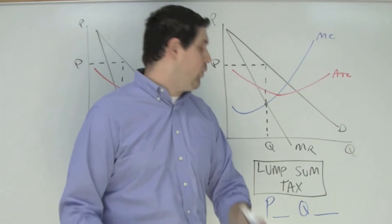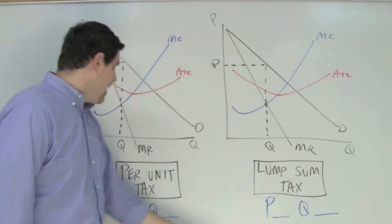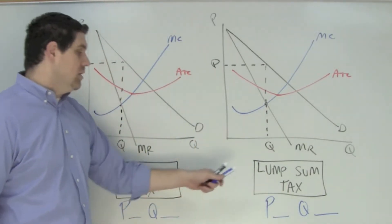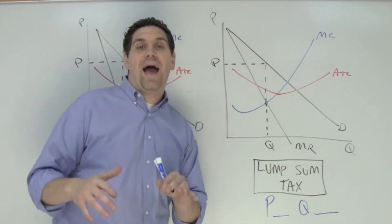To answer this question you need to know the difference between a lump sum tax and a per unit tax. A lump sum tax is a one-time tax on a producer.